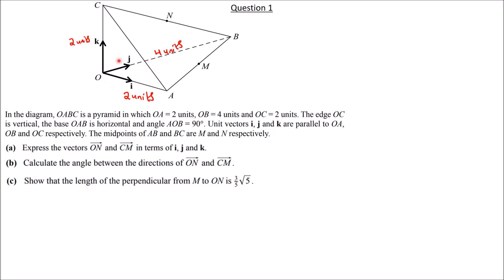OAB is a horizontal surface, also vertical — it is perpendicular to the horizontal surface below. Angle AOB is 90 degrees, so the base triangle OAB is a right-angle triangle.